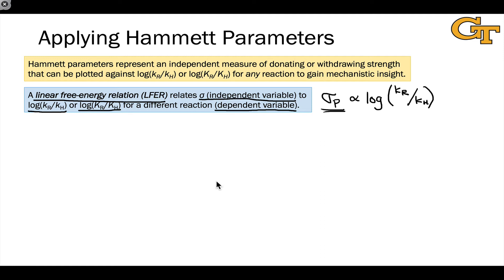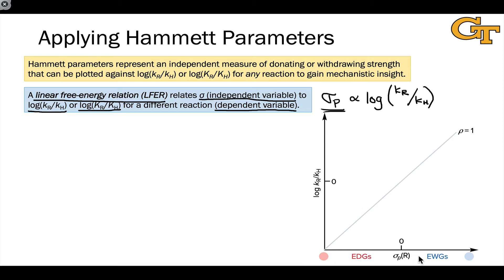The output of a Hammett study is a graph where on the x-axis we have our sigma parameter — using sigma_p to keep things simple — with electron-donating groups on the left with negative values and electron-withdrawing substituents on the right. For the y-axis we measure the logarithm of the ratio of the rate constant when the substituent is R divided by the rate constant when the substituent is H, for many different substituents.